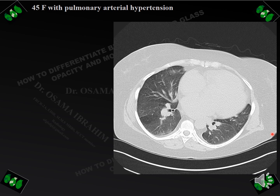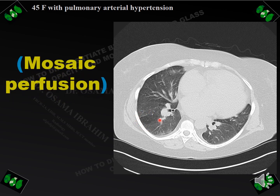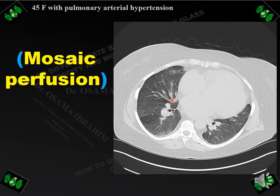On this HRCT there are areas of low attenuation and also areas of high attenuation. The question is: is the low attenuation area abnormal or is the high attenuation area abnormal? Looking at the blood vessels within both areas, the blood vessels in the high attenuation area are larger and greater in number and size compared with the blood vessels in the low attenuation area. So the diagnosis is abnormal low attenuation, which means mosaic perfusion. This patient was a 45-year-old female with pulmonary arterial hypertension.